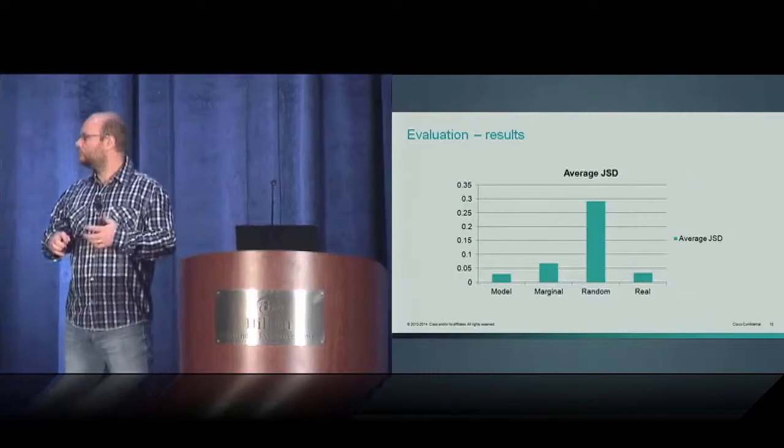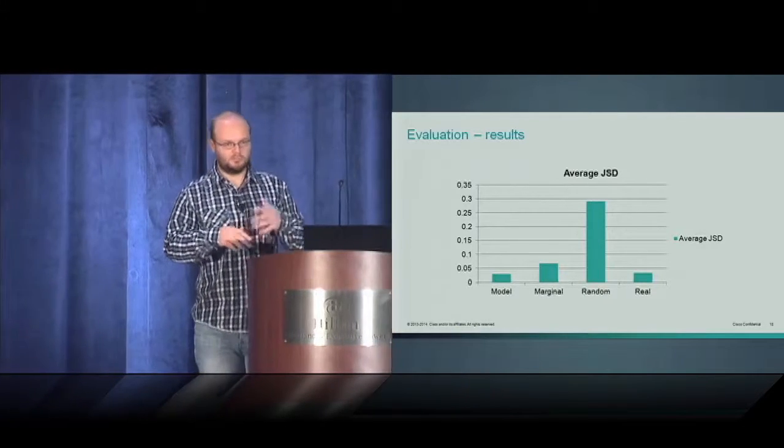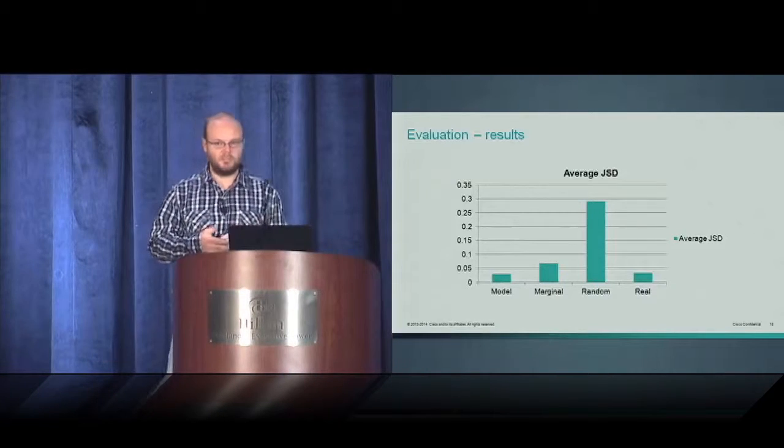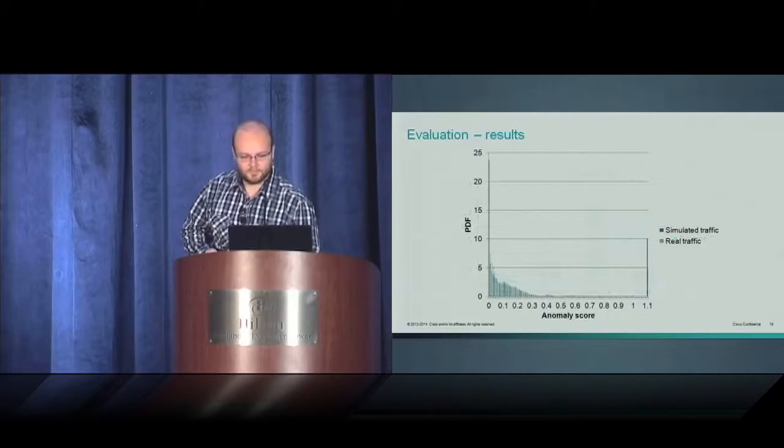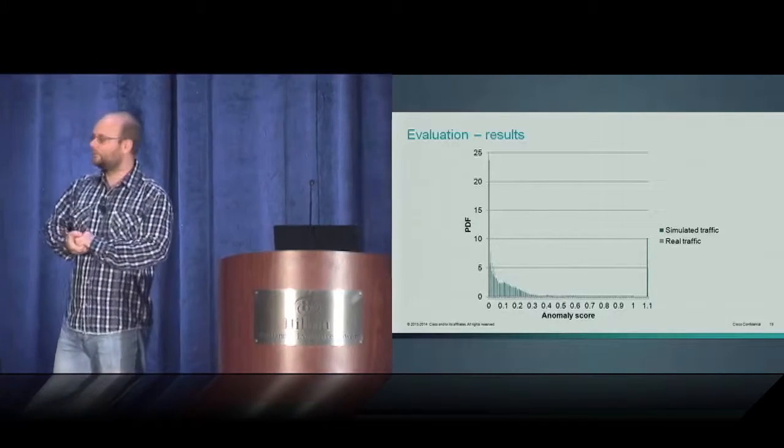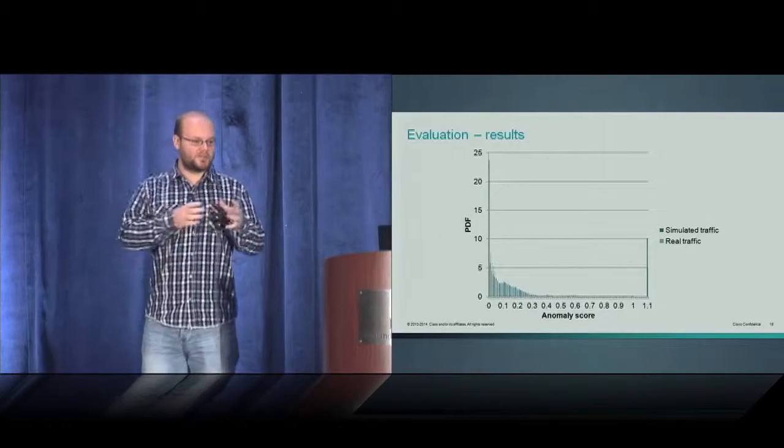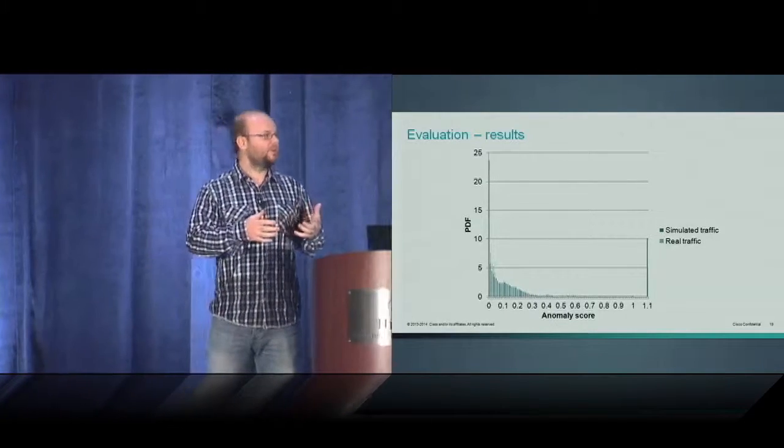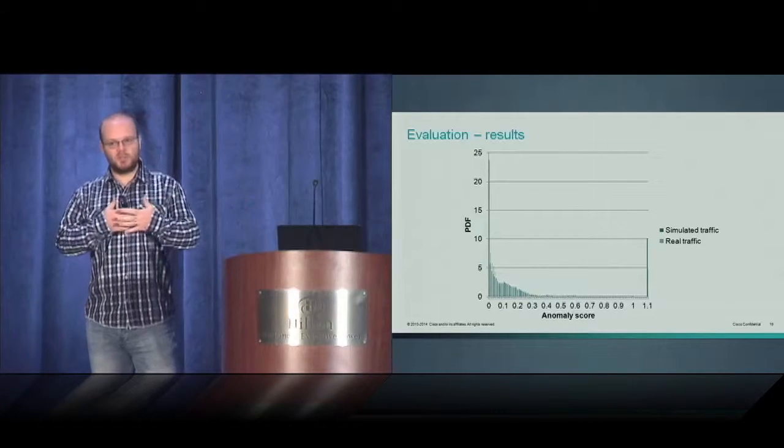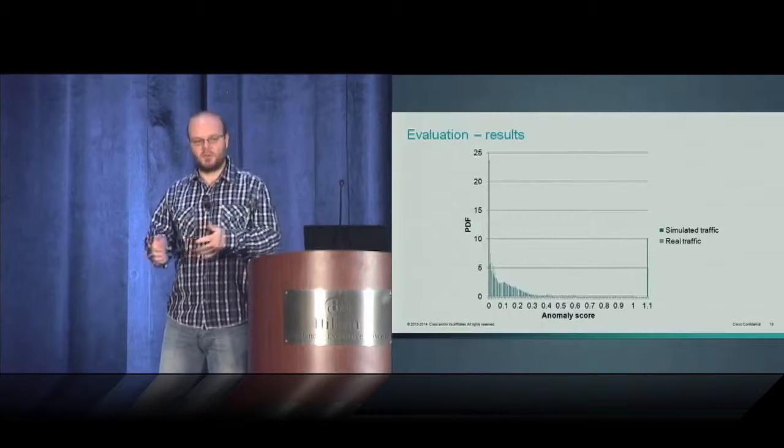Here's the result in the graph. We can see the comparison that the random sampling is maybe even useless. And here's the interesting result. Here you can see the distribution of anomaly score for real traffic and simulated traffic for one particular anomaly detection algorithm. You can visually see that these two distributions are pretty close. So the anomaly detection method is not able to distinguish between the real traffic and the simulated one.